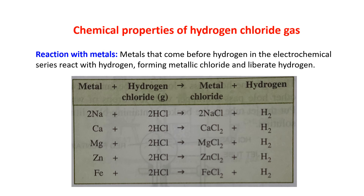Reaction with metals: metals that come before hydrogen in the electrochemical series react with HCl to produce hydrogen gas. Metals below hydrogen in the electrochemical series will not react with HCl. Sodium, calcium, magnesium, zinc, and iron are all present above hydrogen in the electrochemical series, so when they react with HCl they produce the metal chloride and liberate hydrogen gas. For example: Ca plus 2HCl gives CaCl2 plus H2; Fe plus 2HCl gives FeCl2 plus H2.